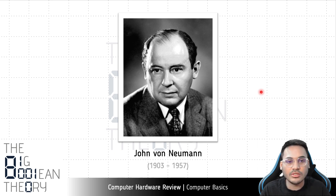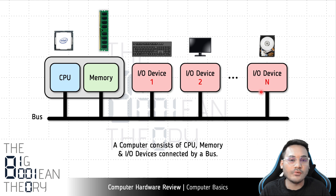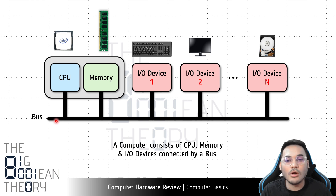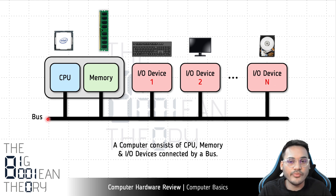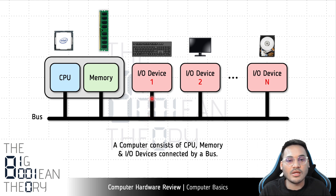Now let us look at how the three components — CPU, memory, and I/O devices — are connected in a computer system. This is an actual model of how the computer is organized, how the different pieces are connected with each other. The three major components — CPU, memory, and the set of I/O devices — are all connected via a bus. A bus is an interconnection system: a set of wires over which all connected components can communicate with each other.